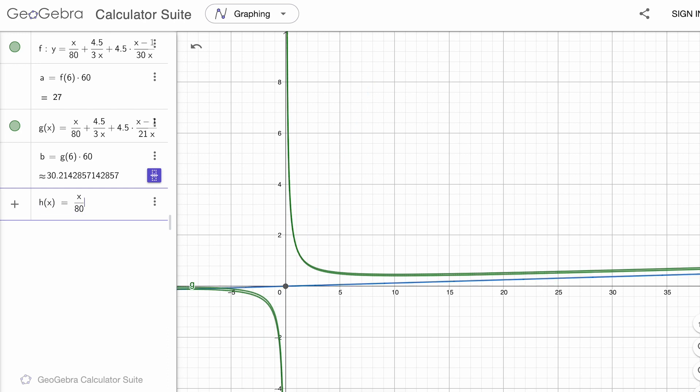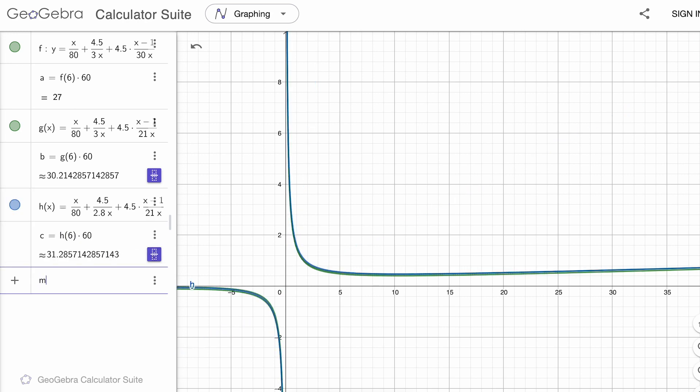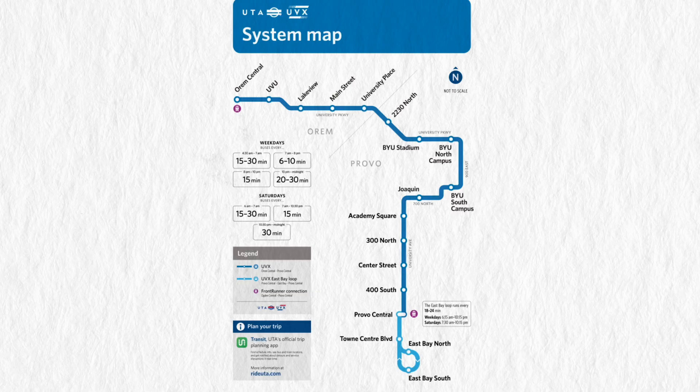I found online that Google uses 2.8 miles an hour as walking speed. If we use that in our model we get a travel time between 31 and 32 minutes. However even with these changes we still get 10 stops as the optimal number of bus stops for a 4.5 mile trip.